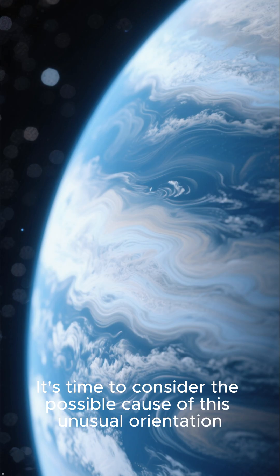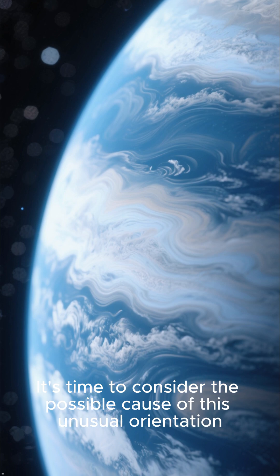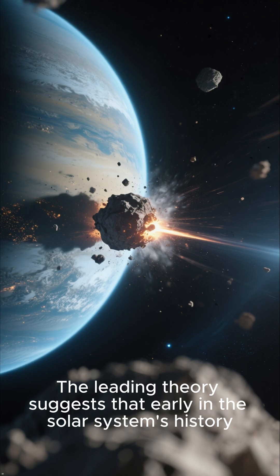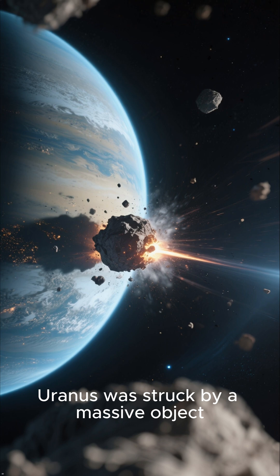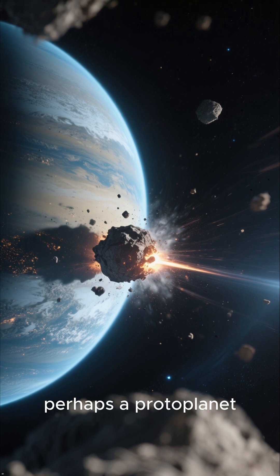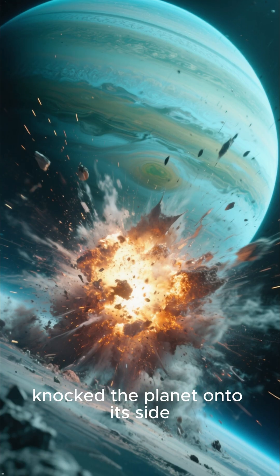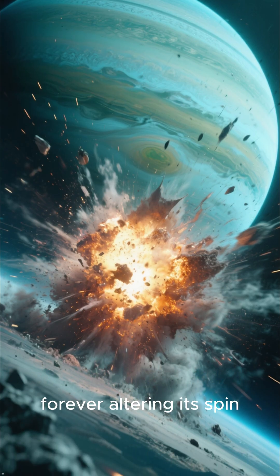A violent past - it's time to consider the possible cause of this unusual orientation. The leading theory suggests that early in the solar system's history, Uranus was struck by a massive object, perhaps a protoplanet. This colossal impact could have knocked the planet onto its side, forever altering its spin.